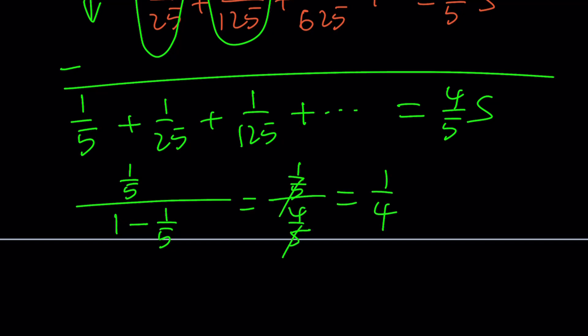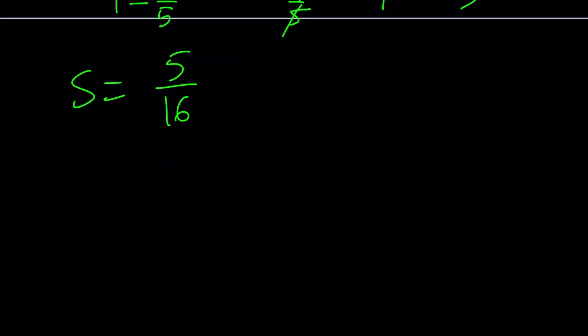So, this is kind of like 1 fifth divided by 4 fifths, which is 1 fourth, which is equal to 4S over 5, and from here, S becomes 5 over 16.